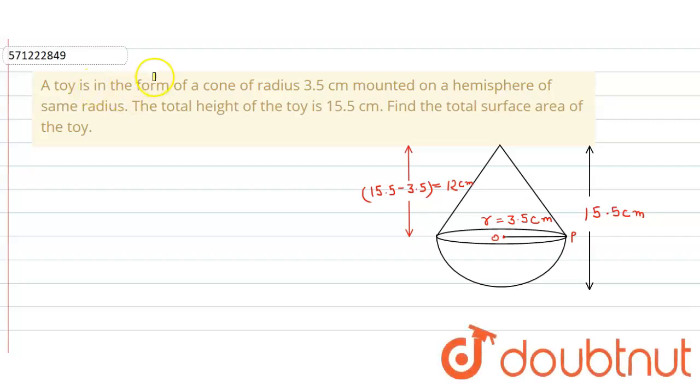In the given question a toy is given in the form of a cone of radius 3.5 centimeter mounted on a hemisphere of same radius. The total height of the toy is 15.5 centimeter. We have to find the total surface area of the toy.